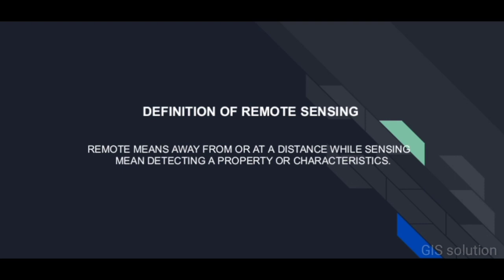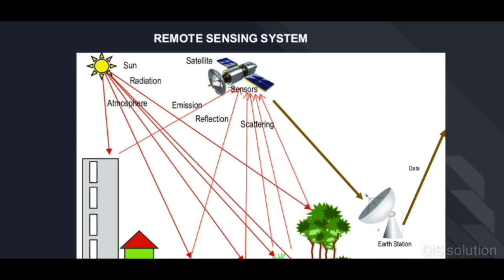This is done by sensing and recording emitted or reflected energy, and then processing, analyzing, and applying that information. For remote sensing we need electromagnetic energy that comes from the Sun. The energy of the Sun falls on different surfaces of the earth like buildings, water bodies, vegetation, etc. Those objects absorb some amount of this energy and reflect some amount.